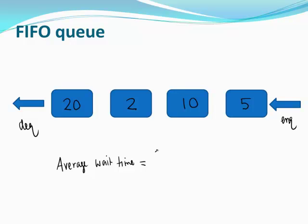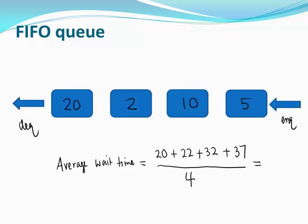Computing the wait times: the first customer waits 20 minutes, the second waits 22 minutes (20 + 2), the third waits 32 minutes (22 + 10), the fourth waits 37 minutes (32 + 5). The total is 20 + 22 + 32 + 37 = 111, divided by 4, which is roughly 27 minutes per customer on average when serving in FIFO order.